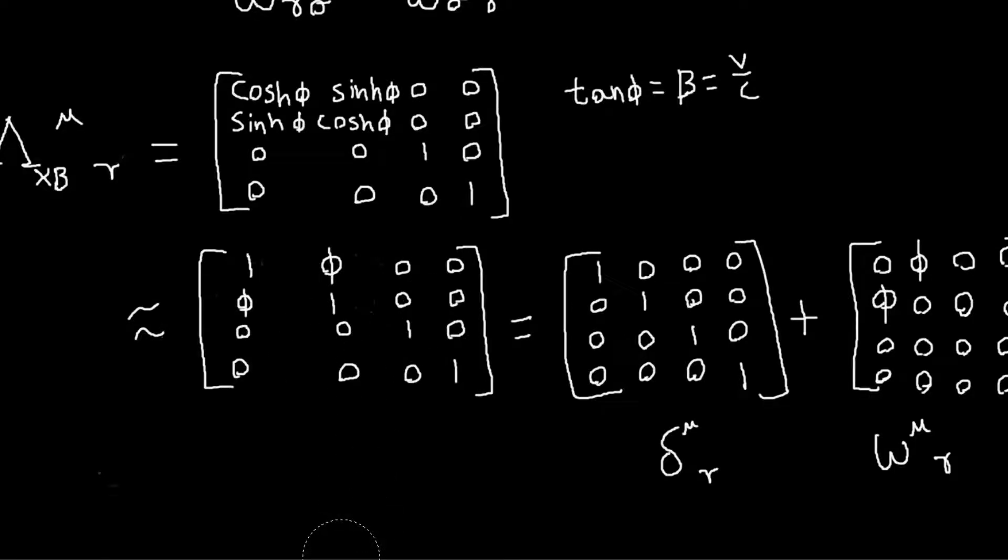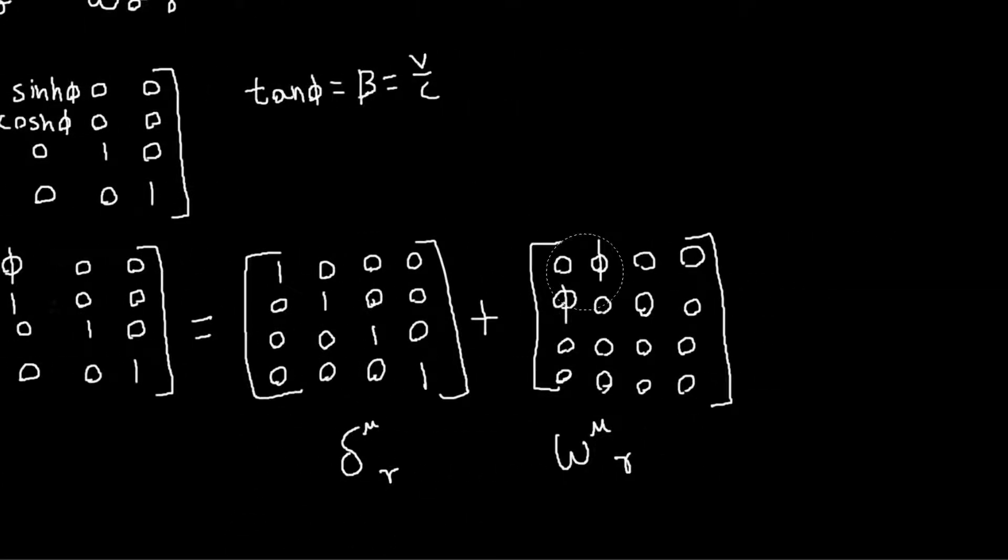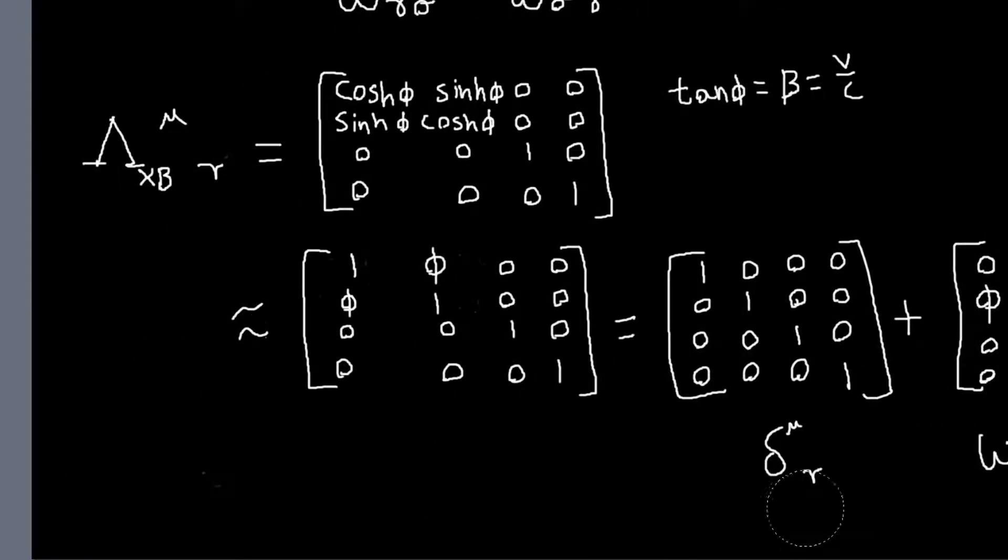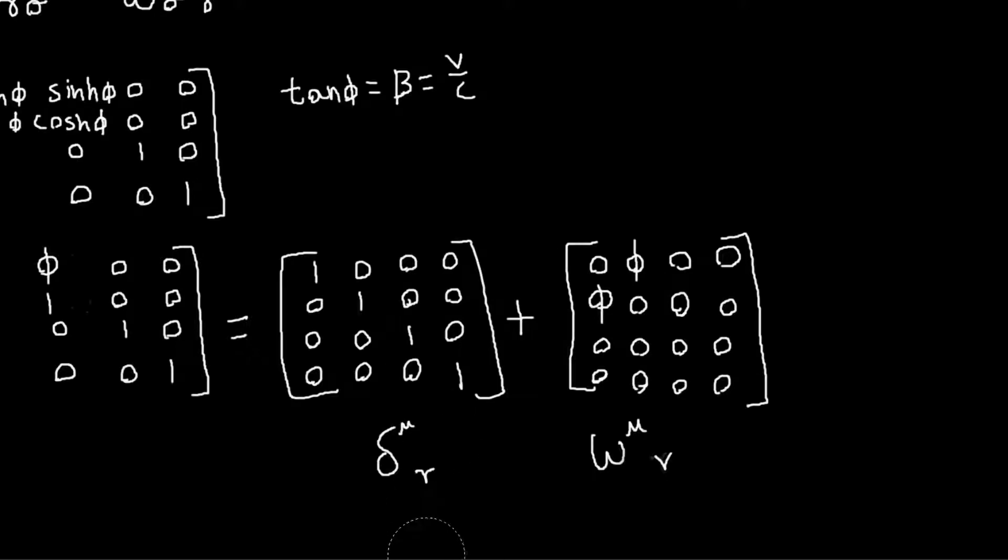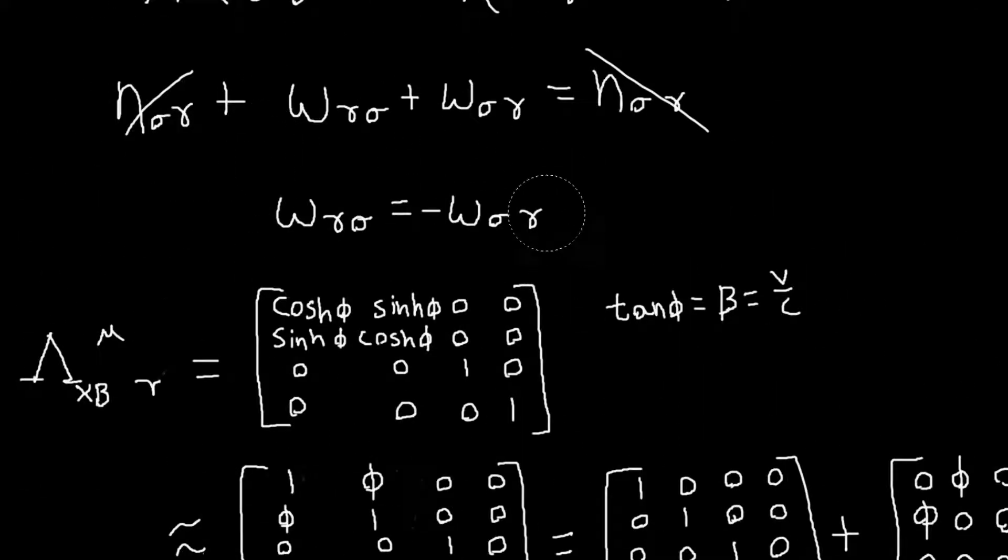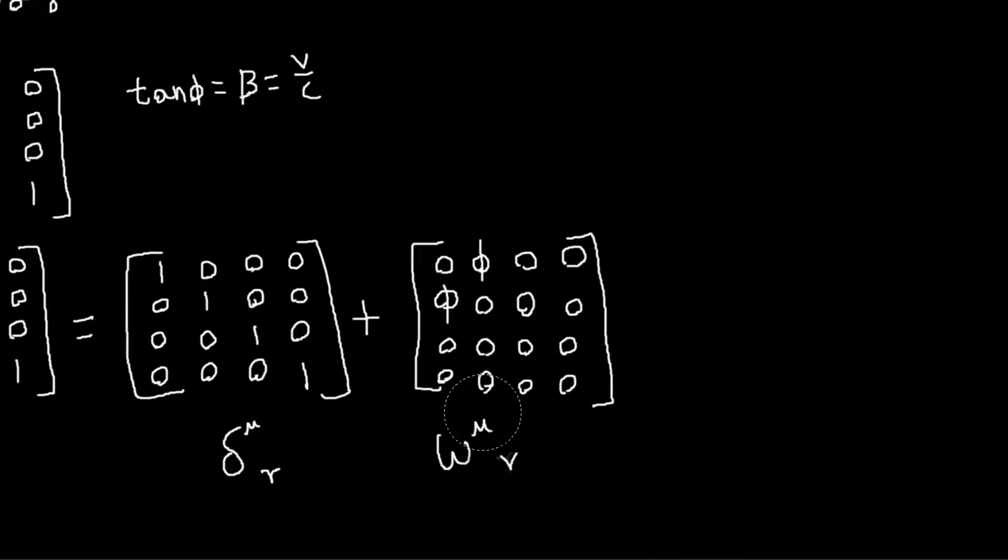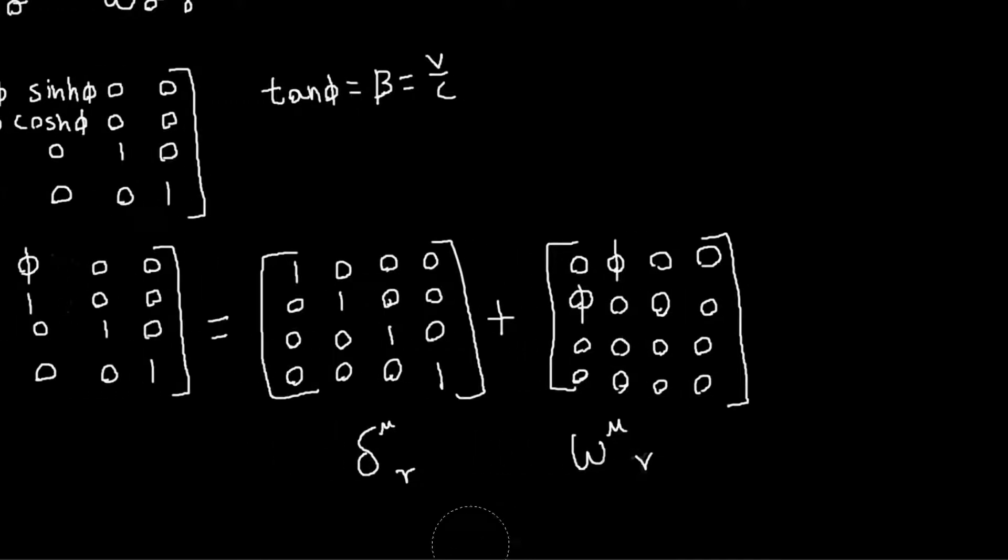But I can write this matrix as the sum of the identity plus this matrix. And so this will be the delta mu nu. This will be our w mu gamma. Whichever indices I'm using. And so anyway, what I was saying before is... so w with two lower indices is anti-symmetric. But our w with one index raised and one lowered is... for the boost, it's symmetric. So if I act, if I lower this index here, I will find that w mu nu with two lower indices. One of these phi's will become a minus, and so it will be anti-symmetric. So it will satisfy this condition.